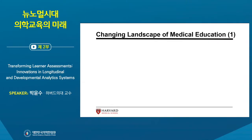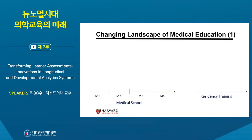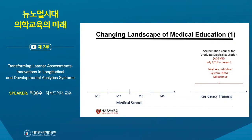This movement toward competency-based education changed the landscape of medical education in the United States and North America. Three institutional changes drove this shift. The first was the ACGME, the Accrediting Council for Graduate Medical Education. In July 2013, they initiated the Next Accreditation System, or NAS, with a mandate around reporting milestone levels toward competency and toward unsupervised practice.